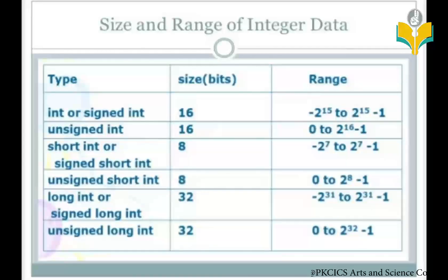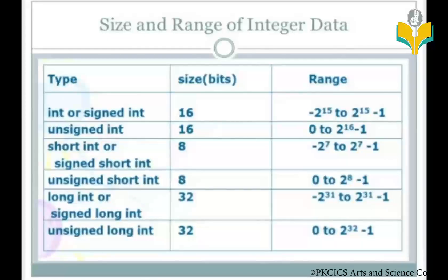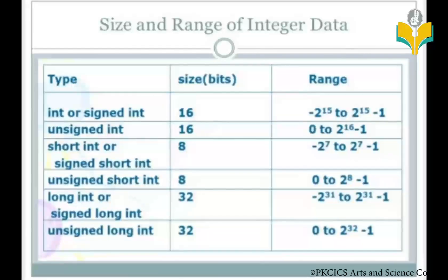Unsigned data is purely positive. Short int has a size of 8 bits, which is 1 byte. Its range is -2^7 to 2^7 - 1. Signed short and short int are the same. Unsigned short is also 8 bits, and since it is purely positive, the range is 0 to 2^8 - 1.